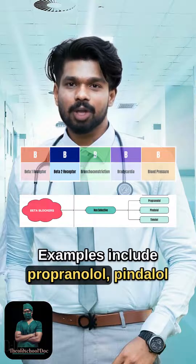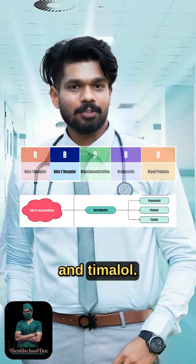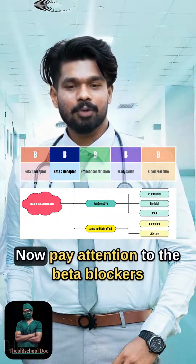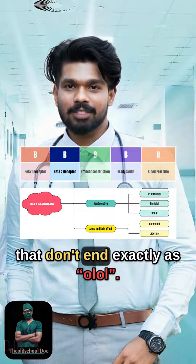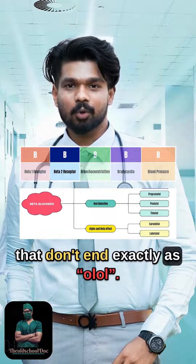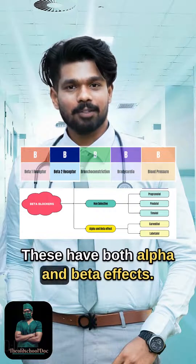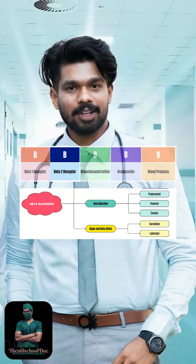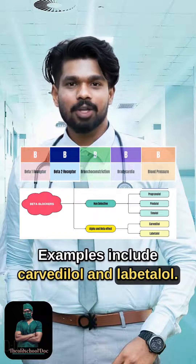Examples include propranolol, pindolol, and timolol. Pay attention to beta blockers that don't end exactly as -olol — these have both alpha and beta effects. Examples include carvedilol and labetalol.